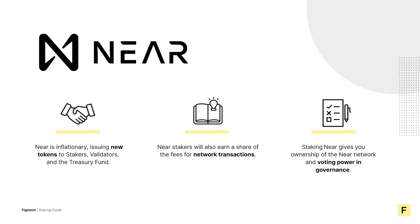On top of new token issuances, NIR stakers will capture fees from network transactions, and as NIR transaction volume increases, so will the rewards for protocol staking NIR. Protocol staking NIR gives you ownership of the NIR network, making NIR stakers entitled to setting and or changing the rules of the NIR protocol, along with deciding how to distribute treasury funds. This is all done through governance, and the amount of NIR you have staked is your voting power. There's tremendous value in having ownership of and a voice in the direction of a protocol.